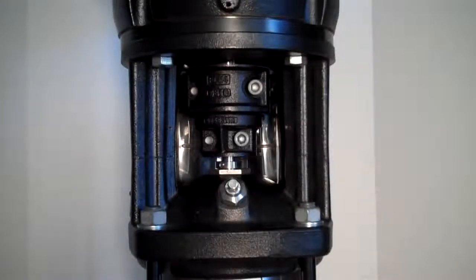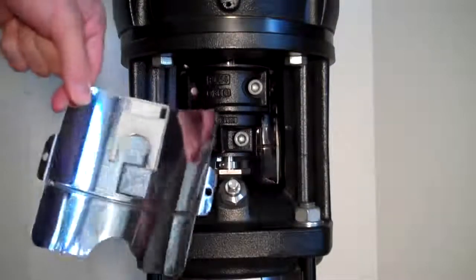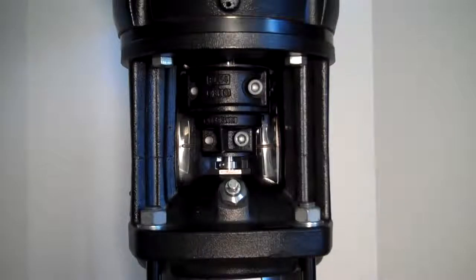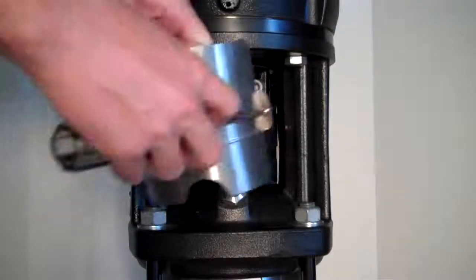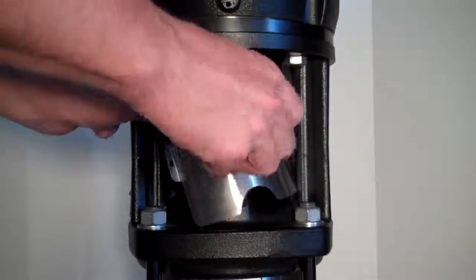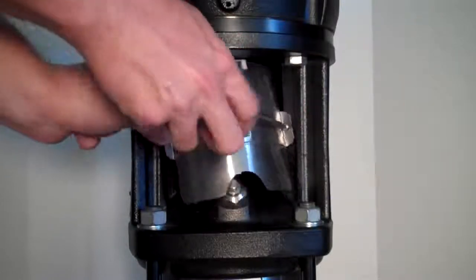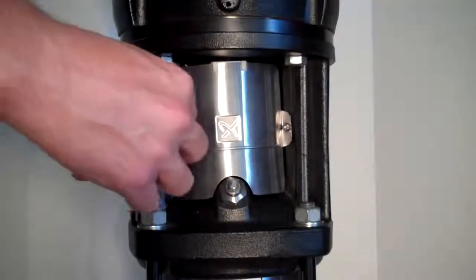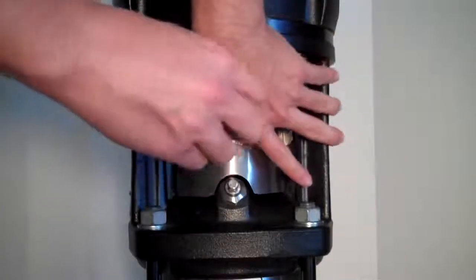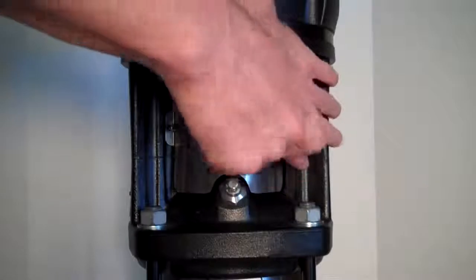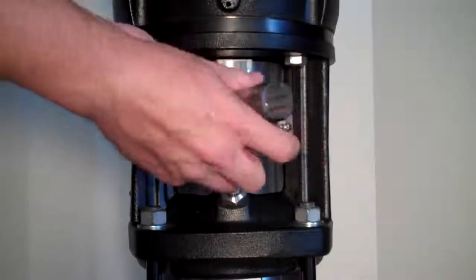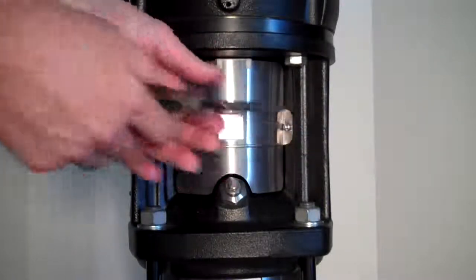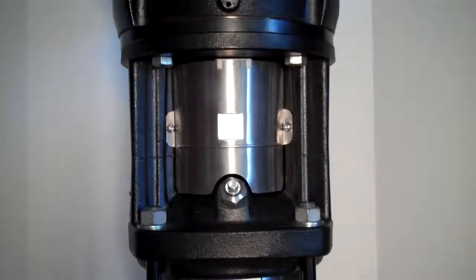Our final step will be to replace the coupling guards. Before you put the last one on, be sure to put your shaft key on the backside of one of the coupling guards. And we're done.